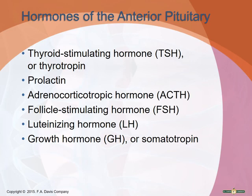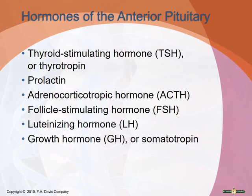The anterior pituitary itself makes several hormones: thyroid-stimulating hormone stimulates the thyroid gland; prolactin stimulates milk production in mammary glands in females and may make the testes more sensitive to luteinizing hormone in males; adrenocorticotropic hormone stimulates the adrenal cortex to secrete corticosteroids; follicle-stimulating hormone stimulates egg production in females and sperm in males; luteinizing hormone stimulates ovulation and estrogen and progesterone synthesis in females and testosterone secretion in males; and growth hormone, also known as somatotropin, promotes protein synthesis, lipid and carbohydrate metabolism, and bone and skeletal muscle growth.